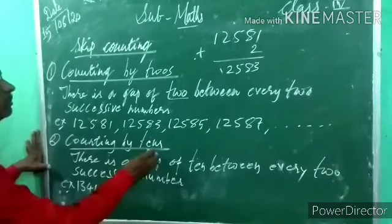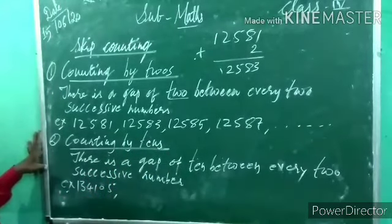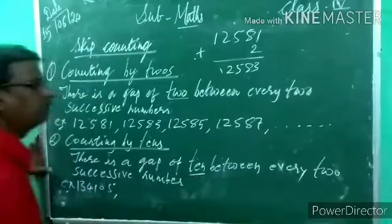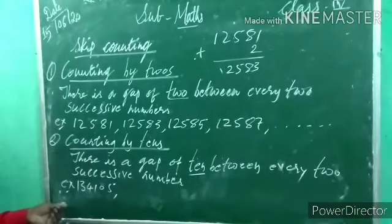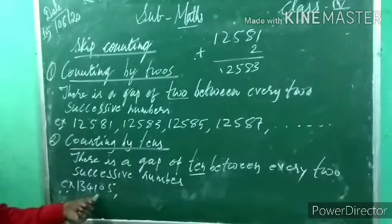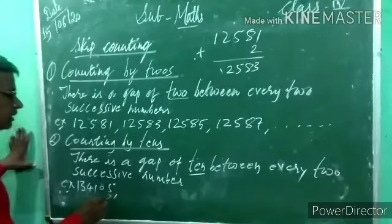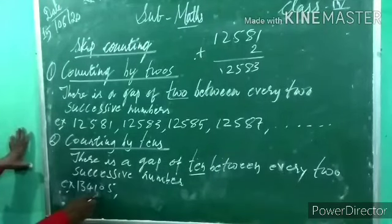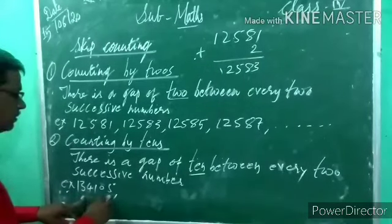Now, counting by 10 means you have to keep a gap of 10 between every two successive numbers. This example has a 6-digit number: 1, 2, 3, 4, 5, 6 digits. How to read: 1, 10, 100, 1,000, 10,000, 1,00,000. The number is 1,34,105. In this number we have to add 10.